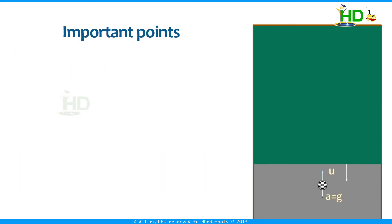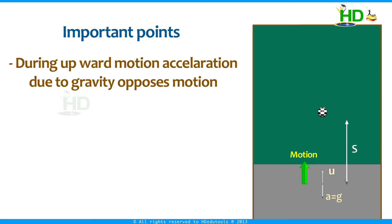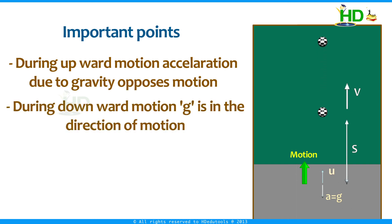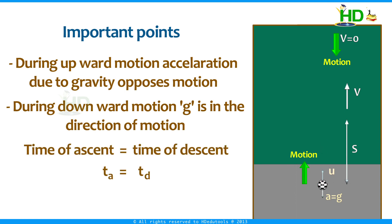Important points to remember: if a body is projected vertically up with initial velocity u, the acceleration is a equal to minus g. This opposes the motion during upward travel, but during downward motion the acceleration is in the direction of motion. The time of ascent equals the time of descent.